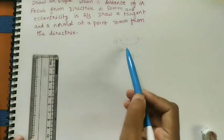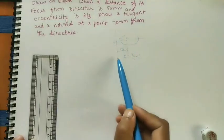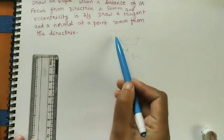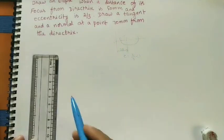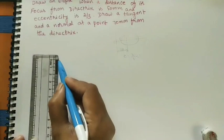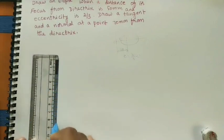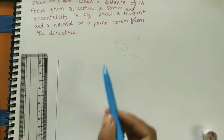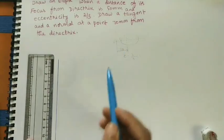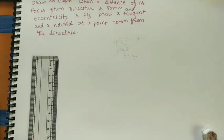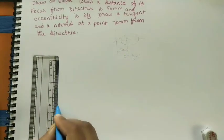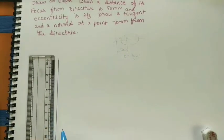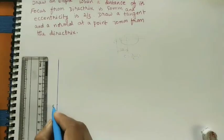For doing the ellipse in the eccentricity method, first draw the directrix. This length we can take any length — here I am taking 12 cm. So this is the directrix. Mark the C point; we can take any point on the directrix. I am taking the middle point, so this is the C point.